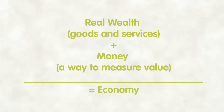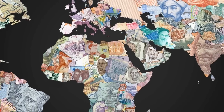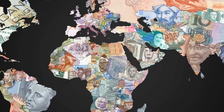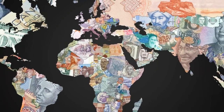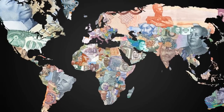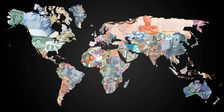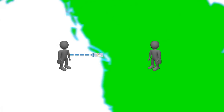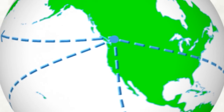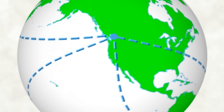Any system where a commonly recognized form of money is used to move real wealth can be called an economy. Right now, there are over 100 different government-backed currencies in the world, and all of them can be exchanged with one another. That means when you spend a Canadian dollar, you're participating in a network that includes just about everyone on the planet.